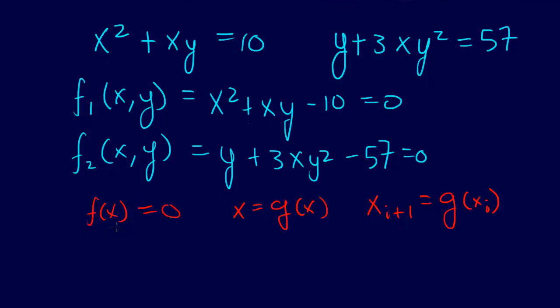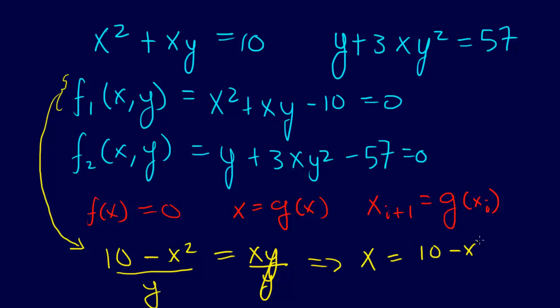So now let's turn this system into that form. We're going to do this in two ways, but let's just start one way. So let's start with this equation. We're going to solve this for x. Let's do 10 minus x squared equals xy. And solving that for x, let's divide this by y. So that cancels. And then we say x equals 10 minus x squared divided by y.